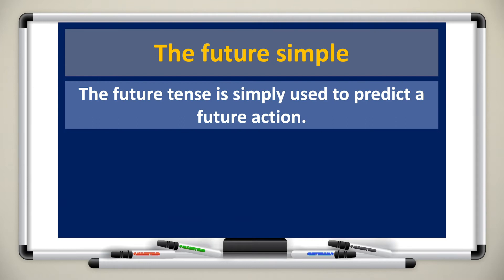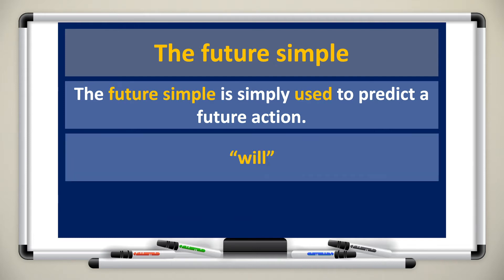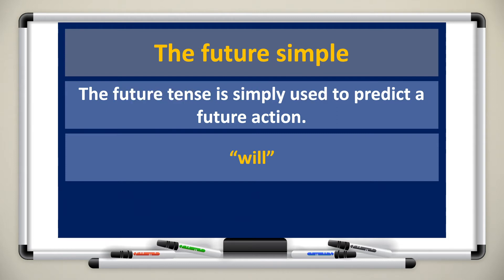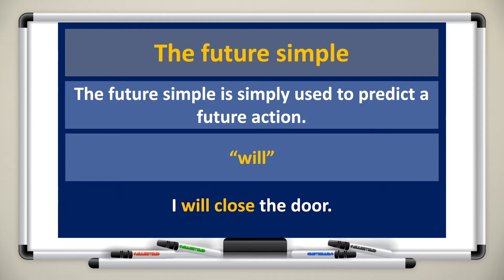The future simple is simply used to predict a future action. When you want to speak about a future action, you will use the future tense. The first word we will use is 'will'. Will is used to speak about the future. For example, when you say 'I will close the door', the speaker or the reader will know that you are speaking about a future action.